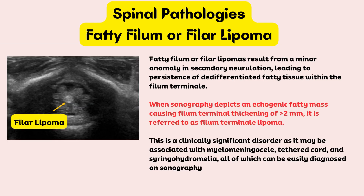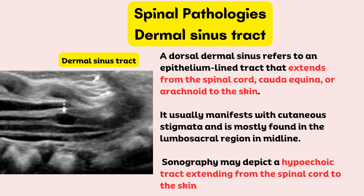Fatty filum or filum lipomas result from a minor anomaly in secondary neurulation, leading to persistence of dedifferentiated fatty tissue within the filum terminale. When sonography depicts an echogenic fatty mass causing filum terminale thickening greater than 2 mm, it is referred to as filum terminale lipoma. This is a clinically significant disorder as it may be associated with myelomeningocele, tethered cord, and syringohydromyelia, all of which can be easily diagnosed on sonography. A dorsal dermal sinus refers to an epithelium-lined tract extending from the spinal cord, cauda equina, or arachnoid to the skin. It usually manifests with cutaneous stigmata and is mostly found in the lumbosacral region in the midline; sonography may depict a hypoechoic tract extending from the spinal cord to the skin.